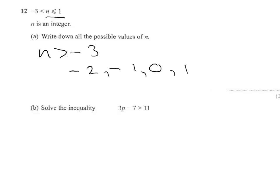Now, we solve this inequality: 3p minus 7 is greater than 11. To solve an inequality, you treat it really rather like an equation and we want p isolated.